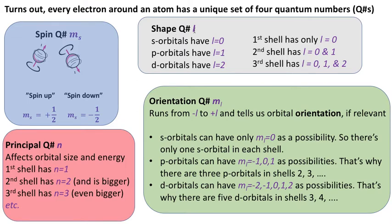Going on, there's also a shape quantum number. That's given by the letter l. And that's fairly straightforward too. The s orbitals, all s orbitals which are the round guys, have l equals zero. And all p orbitals have an l value of one. And d orbitals have an l value of two.